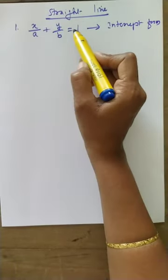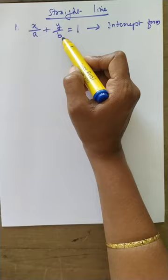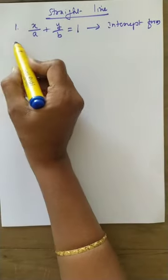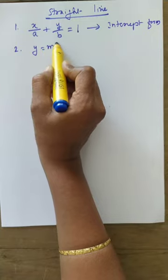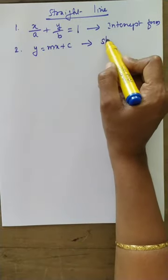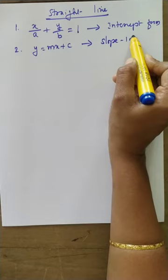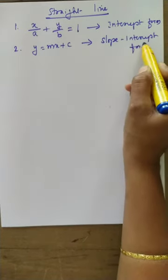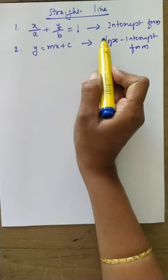X intercept and y intercept both are given — that is why it is called as intercept form. Second one: y is equal to mx plus c, called as slope intercept form, because slope m and y intercept c are given.